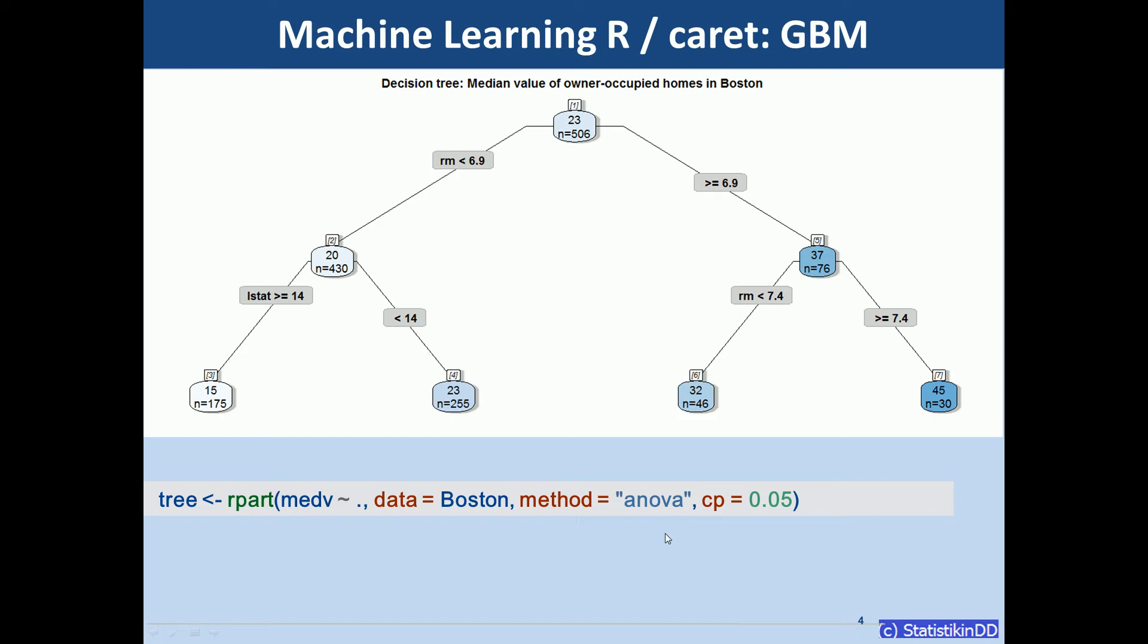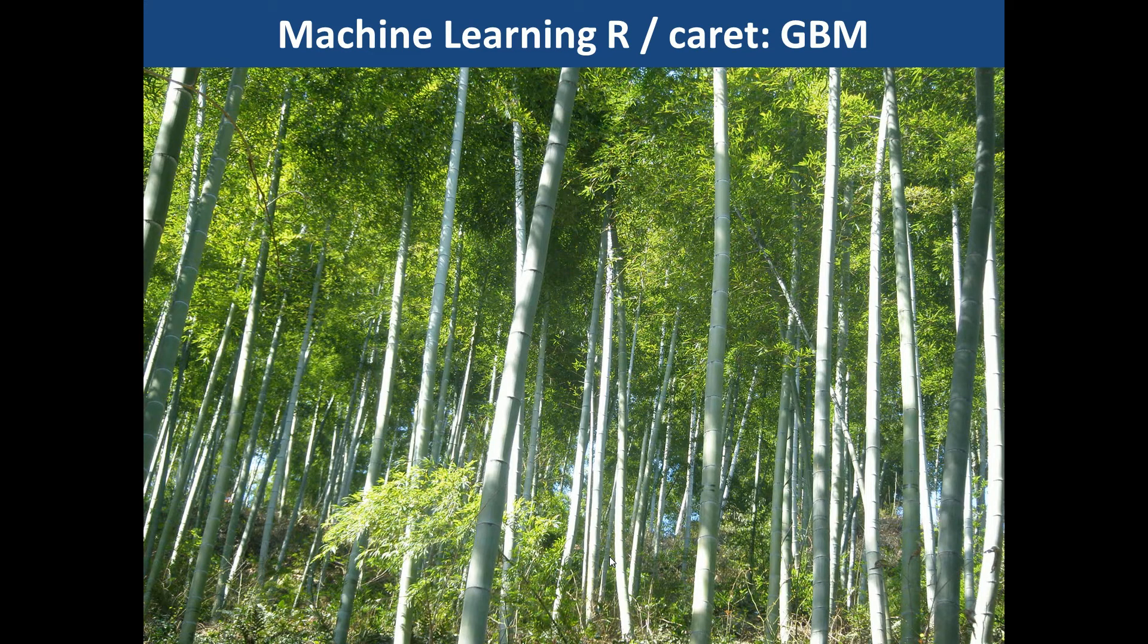Now you can imagine that using a single decision tree to make predictions would not be very accurate. This is not a very fine-tuned model. So to get better predictions we have to look at different methods and one way is to combine a lot of trees.